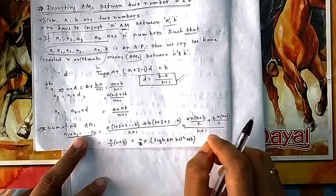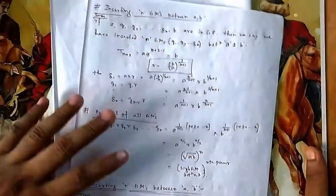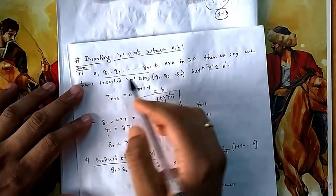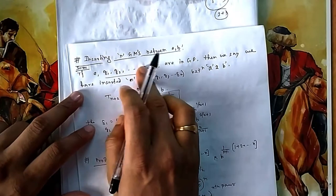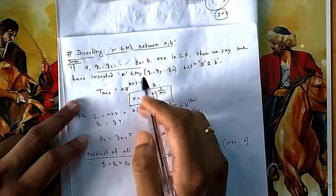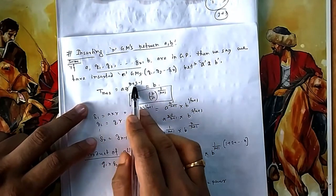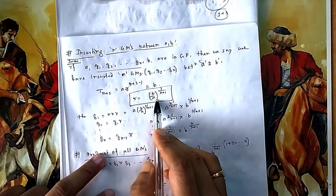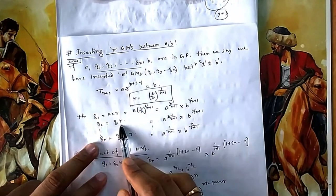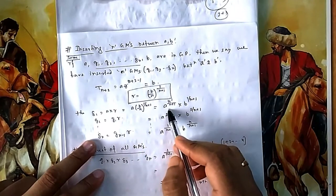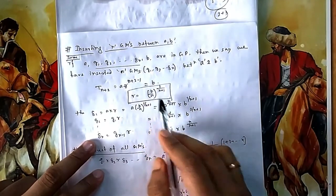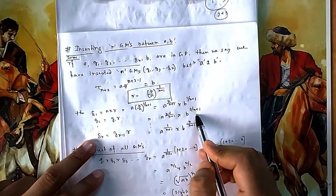Similarly for GM. If g1, g2, ..., gn are inserted numbers such that a, g1, g2, ..., gn, b forms a GP, then those are the GMs inserted between a and b. The last term t(n+2) = b. Once you know the common ratio r, you can find g1 = a·r, g2 = g1·r, and so on.